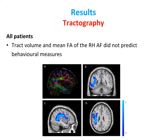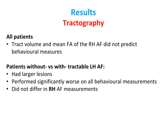We next attempted to track the arcuate fasciculus of each participant in both hemispheres. The image below shows regions of interest used for tracking and the average arcuate fasciculus of all control participants. We found that in the patient group, tract volume and minimum FA of the right hemisphere arcuate fasciculus did not predict behavioral measurements. We also compared two groups of patients: those for which we could or could not track the arcuate fasciculus of the left hemisphere. We found that patients for whom we could not track the left hemisphere arcuate fasciculus had larger lesions and performed significantly worse on language tasks, but importantly, they did not differ in measurements of the right hemispheric arcuate fasciculus.